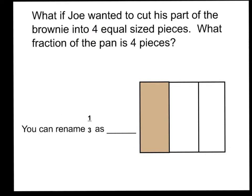My next question says, what if Joe wanted to cut his part of the brownie into four equal size pieces? What fraction of the pan is four pieces? Now remember, we're talking about his part. And we know this portion right here is his part. I'm going to take his portion and I'm going to cut it into fourths. The best way for me to cut it into fourths is to first try my best to cut it in half, and then cut each of those halves in half. There you can see that his portion has four parts. Now remember, with fractions, all parts of the whole must be equal. Therefore, I'm going to continue this model to show that he still has four equal parts out of his original one third.